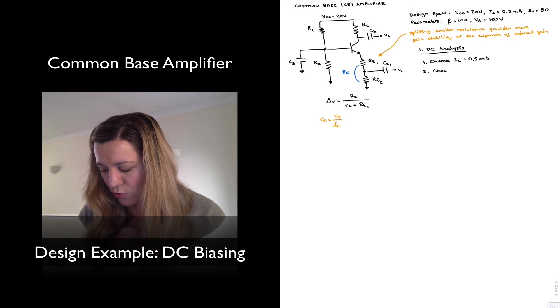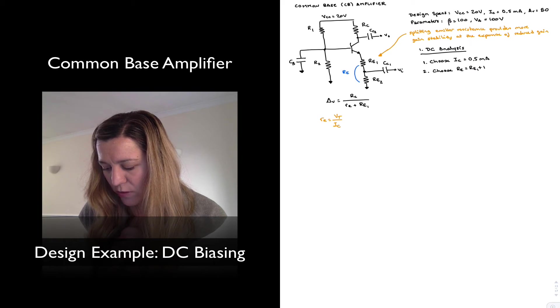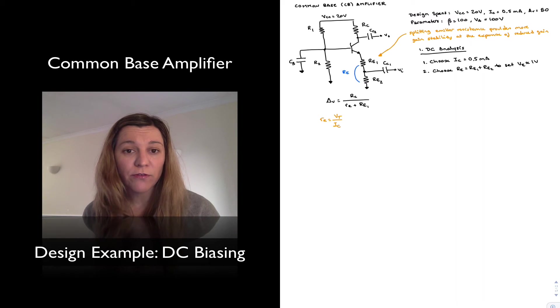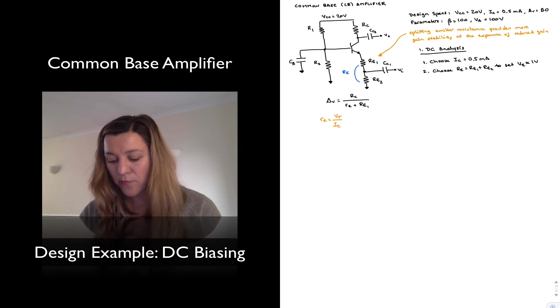And so I'm going to choose RE, which is a series combination of RE1 and RE2, to set the emitter voltage to approximately equal to one volt. And the reason for that is for temperature stability. And we can see that we have the same DC bias network as we will have for a common emitter amplifier.